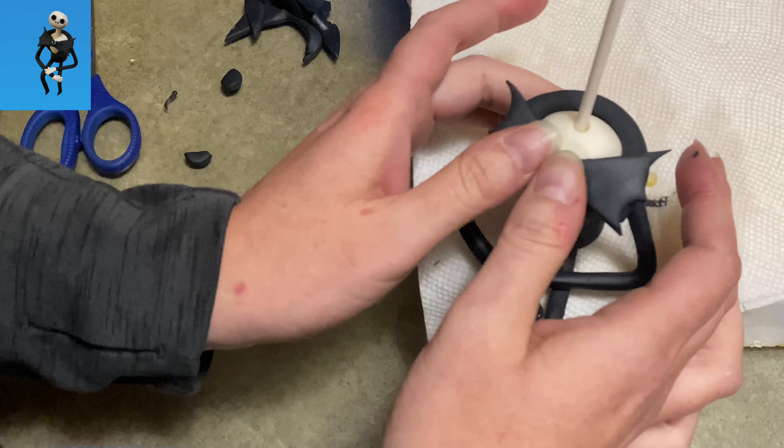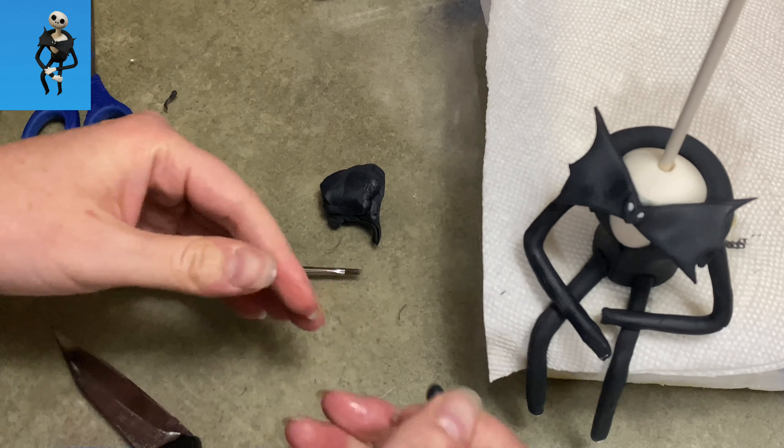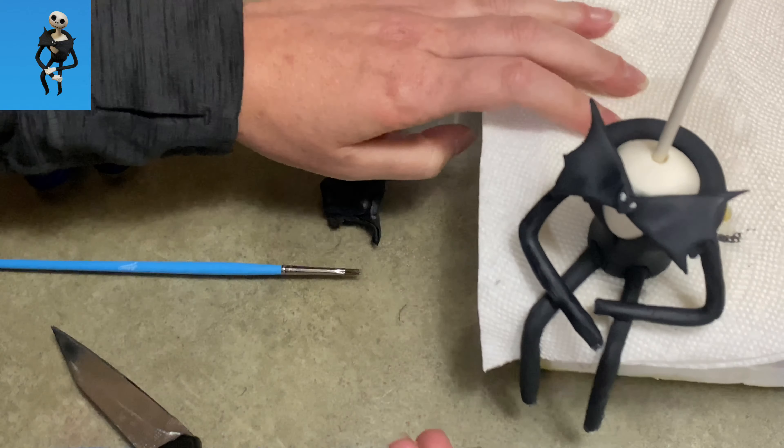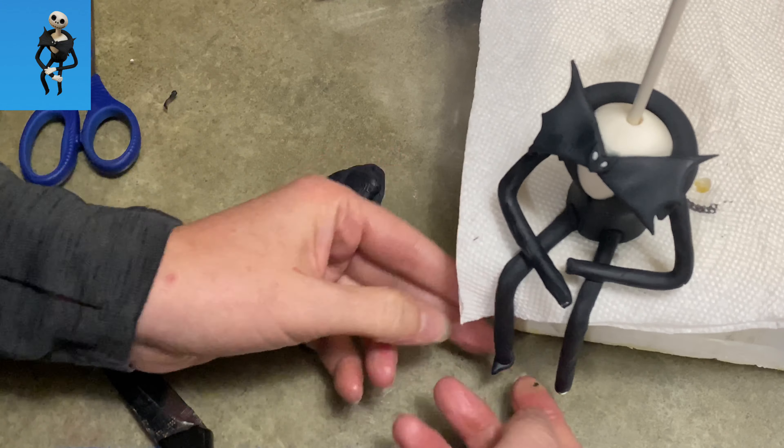And now we're coming back to our bat. Remember I said to put him aside so he could stiffen up a little bit? Well, now he's ready to go right on his shirt. A little bit of water in the back and stick him on and his wings stick out so nice, right?